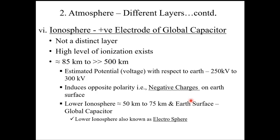This is a huge voltage, and the lower ionosphere in particular has this potential nearly constant with respect to Earth — a positive potential of 250 to 300 kilovolts which is nearly constant. This high voltage induces negative charges on the Earth's surface. The lower ionosphere is an important part of the lightning activity.